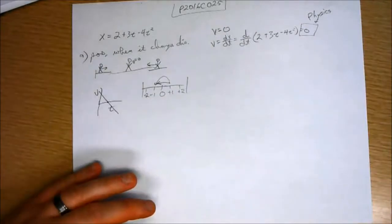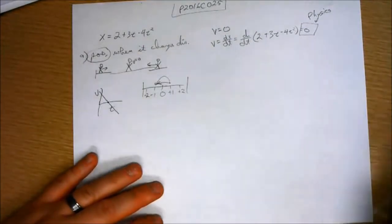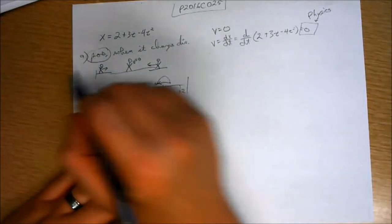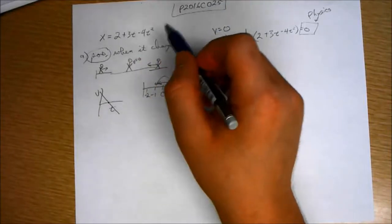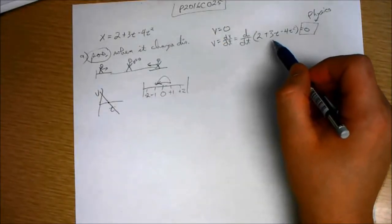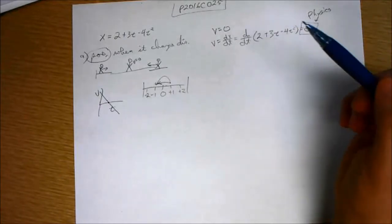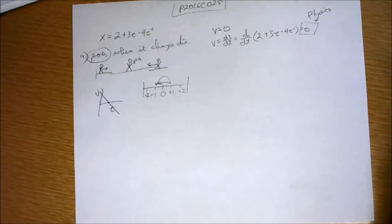And what are we after to begin with? We are after its position when it changes direction. So we're after x. We don't know anything about the position when it changes direction from this, but we can find when the velocity equals zero and that's going to be able to give us the time when the velocity equals zero and then we can plug that in the position function.